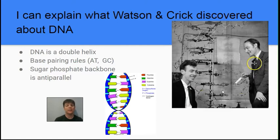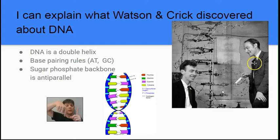Finally, they described the sugar-phosphate backbone running anti-parallel. This is information they got from the data from Rosalind Franklin. This means that on one side of the DNA molecule the strand is running pointing up, while on the other strand it points down. That is the meaning of anti-parallel — the strands are parallel but point in opposite directions.